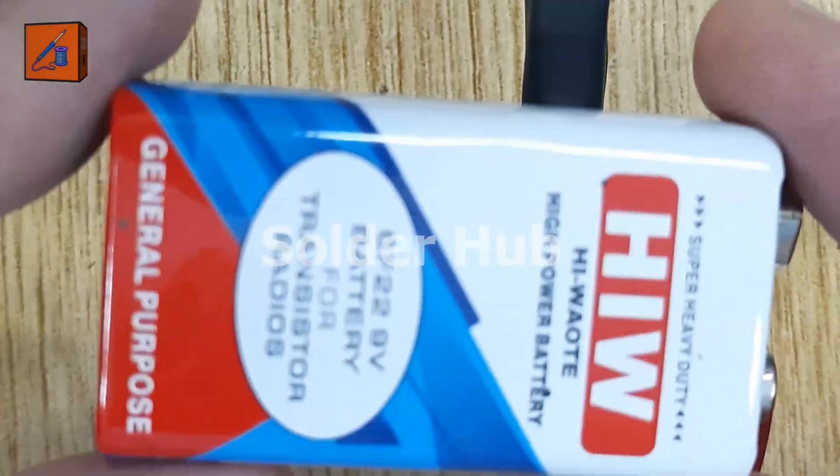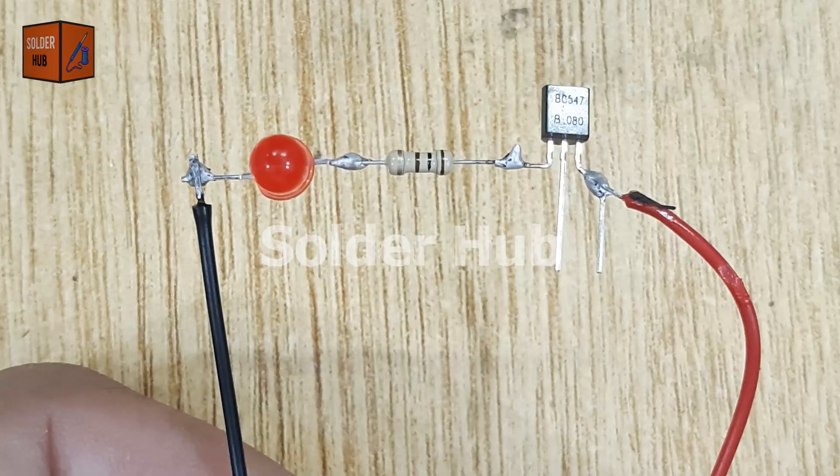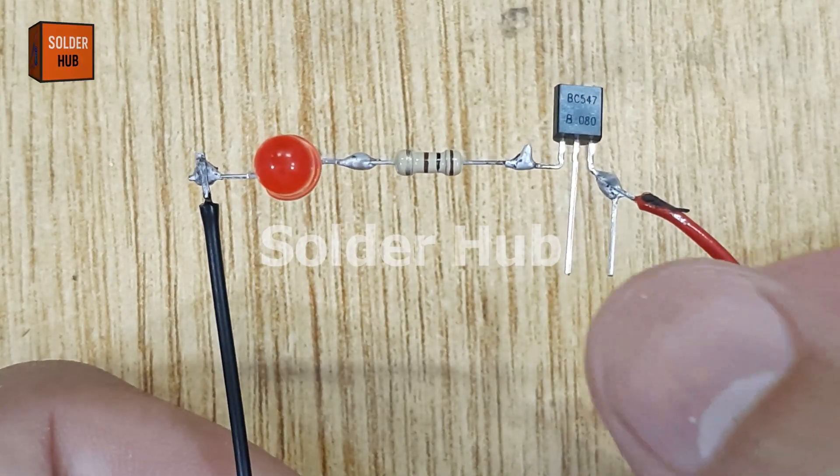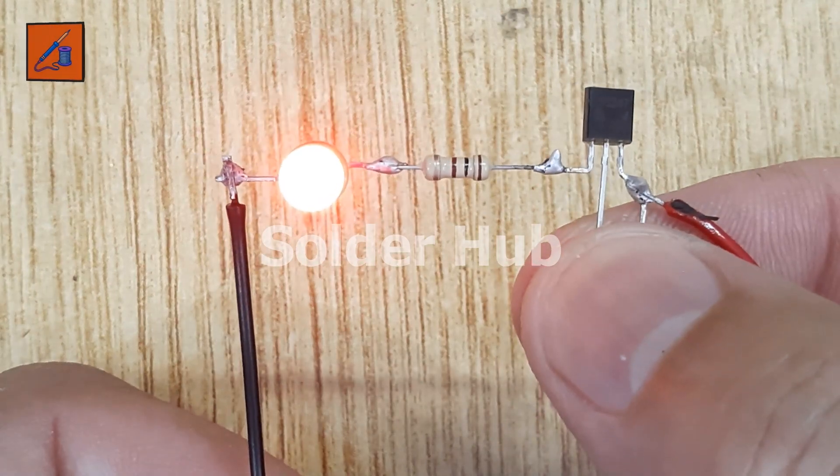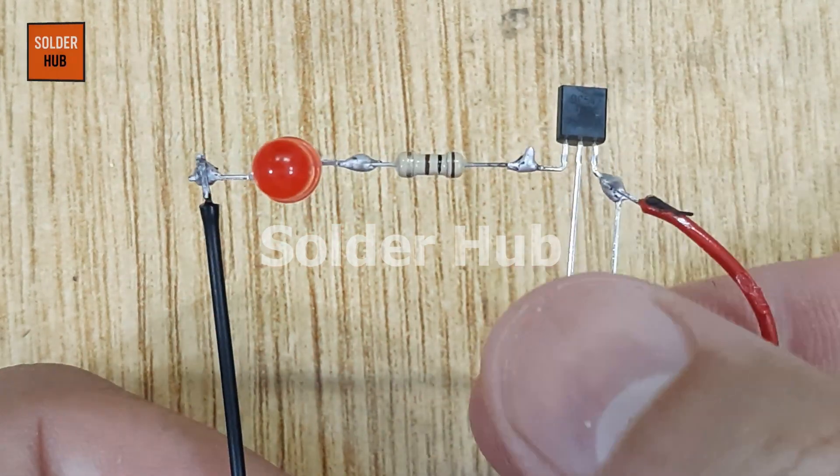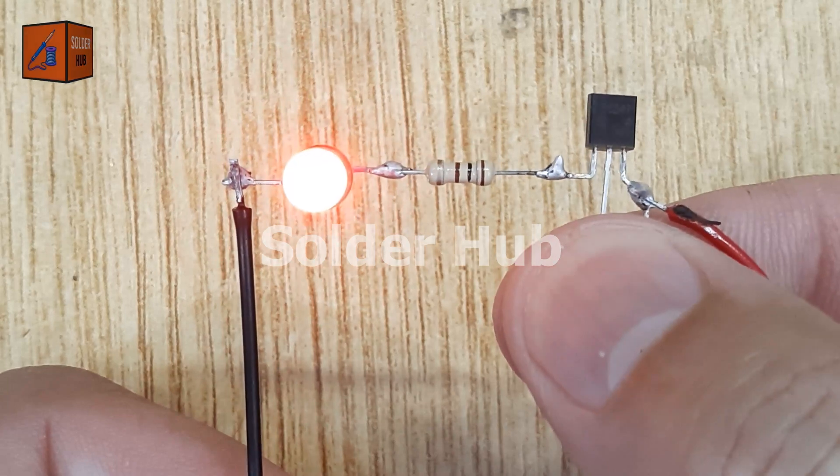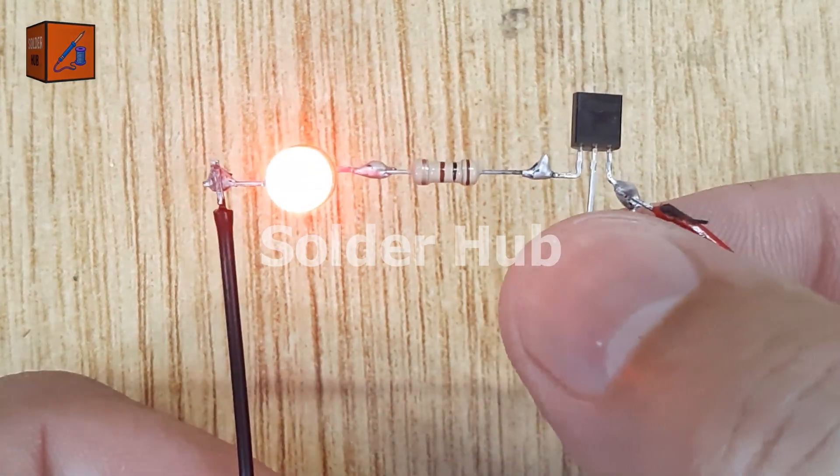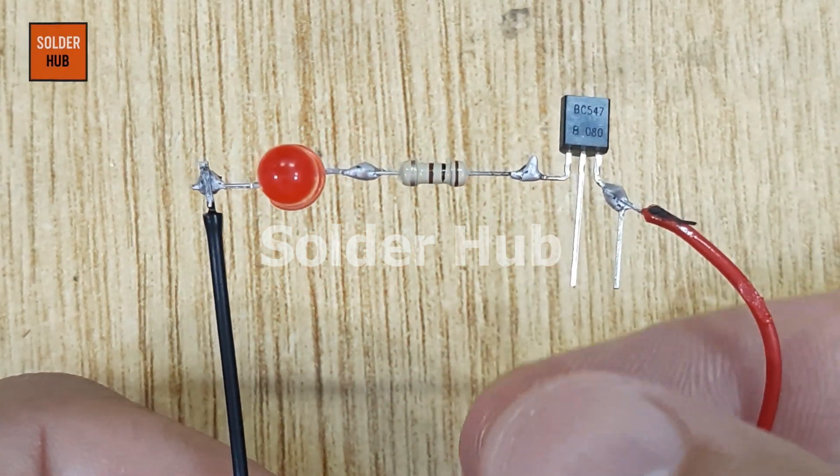Now, it's time to test the circuit. When I touch the emitter and base pins of the transistor with my finger, a small amount of current flows through my skin, which triggers the transistor and causes the LED to light up. It works even better if your finger is slightly moist as that increases conductivity.